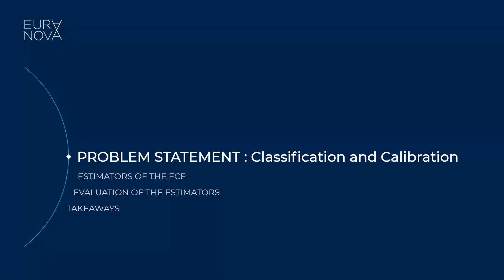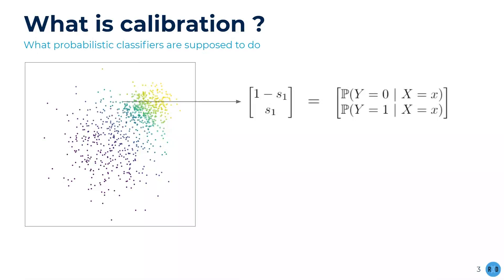When working with classification, what we hope to make is a model which, for any point in input space, returns the conditional probabilities of this point belonging to each class. Each score must be between 0 and 1 and the sum must equal 1 for each sample. Popular belief says that these constraints are enough to consider scores as probabilities. This is wrong. The fact that a classifier properly orders the scores from most probable to least probable doesn't necessarily mean that these scores are correct estimates of the posterior probabilities. In practice, except for very specific cases, scores do not match true posterior probabilities.